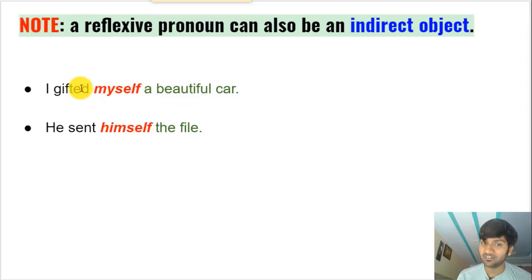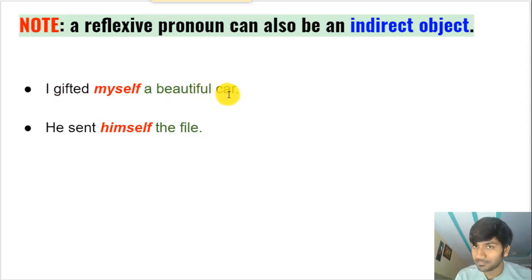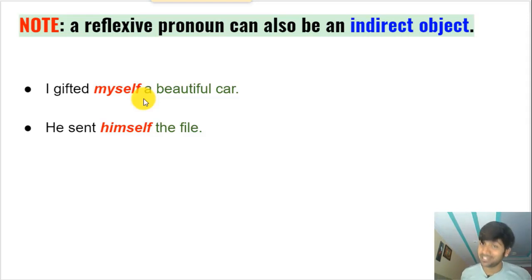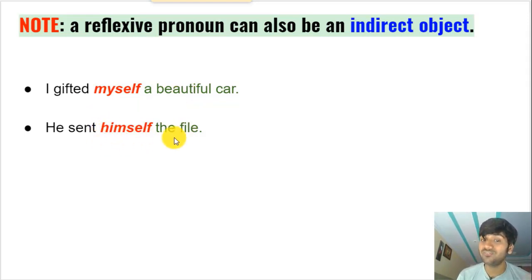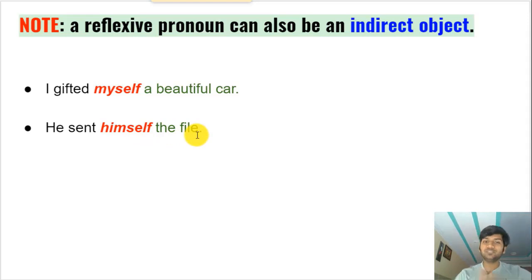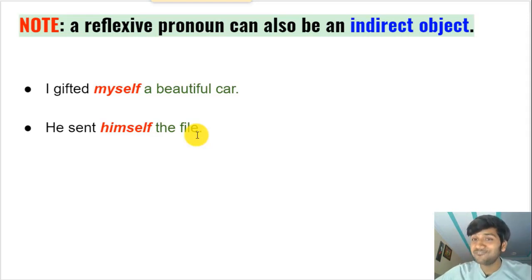Reflexive pronouns can also work as indirect objects. For example: 'I gifted myself a beautiful car' — 'a beautiful car' is the direct object and 'myself' is the indirect object. Similarly, 'He sent himself the file' — 'the file' is the direct object and 'himself' is the indirect object. So reflexive pronouns can follow a transitive verb, a preposition, or work as an indirect object.